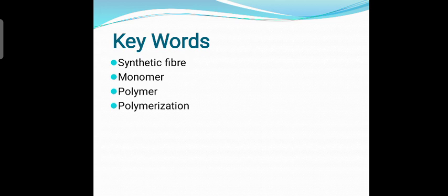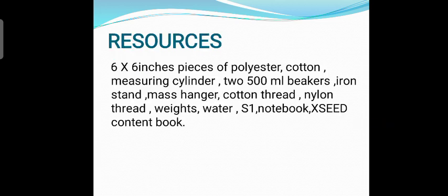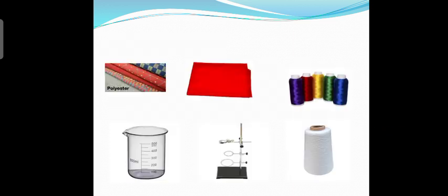The resources required are 6 by 6 inches pieces of polyester fabric and of the same dimension cotton fabric, measuring cylinder, two 500 ml beakers, iron stand, mass hanger, cotton thread, nylon thread, some weights, water, your volume book, science notebook, and exit content book. These are the pictures of resources — by seeing them it will be quite easy to arrange them.